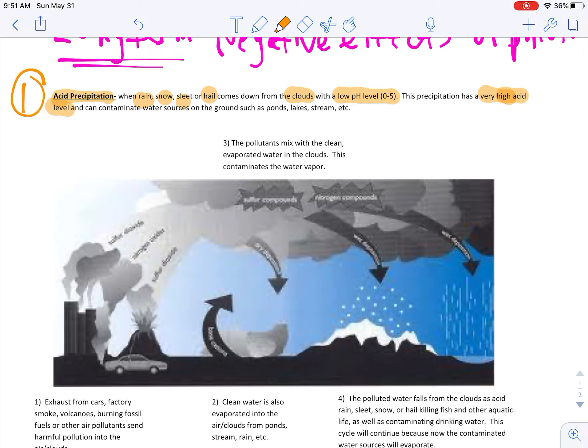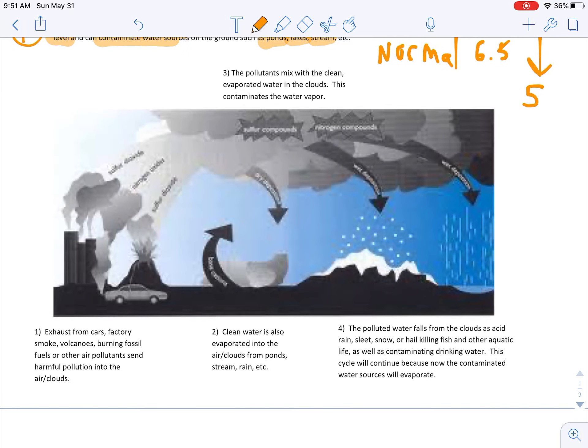Now, if it's high in acid level, it can contaminate water sources such as ponds, lakes, and streams. The normal pH of rain is about six, six and a half. So this has to go below five. If it goes five or below, then it becomes considered acid precipitation.